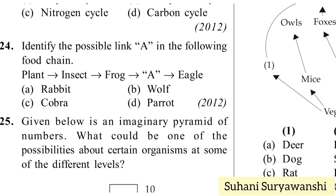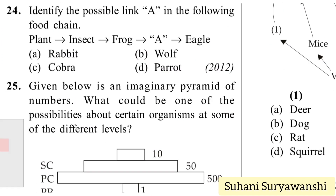Identify the possible link A in the food chain: plant → insect → frog → A → eagle. Options: rabbit, wolf, cobra, or parrot. Eagle eats cobra or snake, so the answer will be option C — cobra.